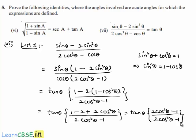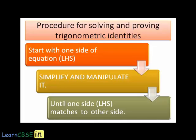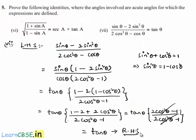Here in the numerator and denominator we have 2 cos squared theta minus 1 as common, which will be cancelled, and finally we are left with tan theta, which is the right hand side. So here as LHS is equal to RHS, we can see that sin theta minus 2 sin cubed theta divided by 2 cos cubed theta minus cos theta is equal to tan theta.